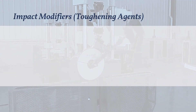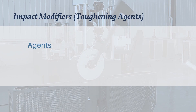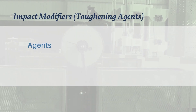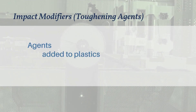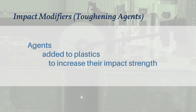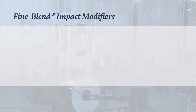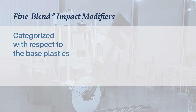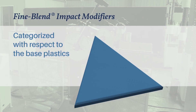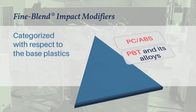An impact modifier, also called a toughening agent, is chosen as a component of a compounding material to enhance its impact strength. Fine Blend has three main types of impact modifier products with respect to the base compounds.